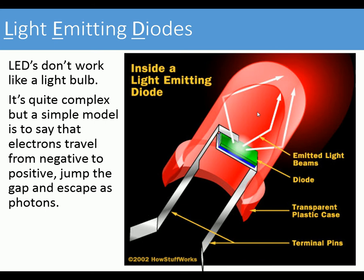LEDs don't work like light bulbs. There's quite complex physics involved, but a simple model is to say that electrons travel from the anode — from negative to positive — they jump a gap, and some escape as light particles or light beams.